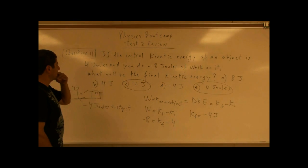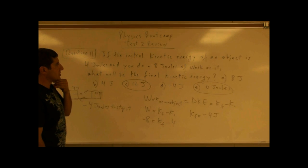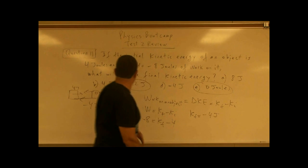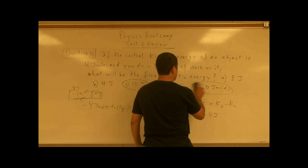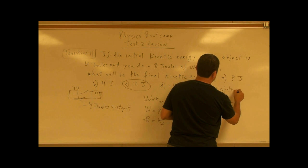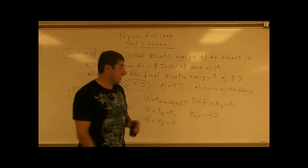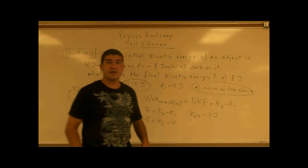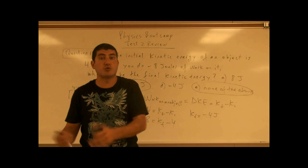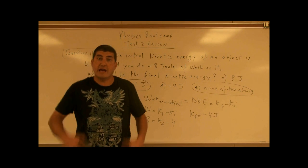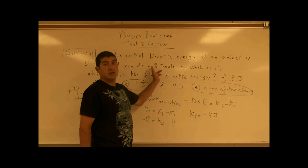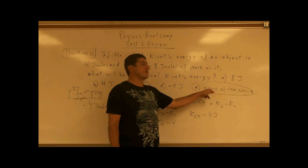So actually, if the problem says negative eight joules of work, the choices should be eight joules, four, twelve, negative four, and choice E should say 'none of the above' — and that's going to be the answer. It is not possible to do negative eight joules of work. If something has only four joules of kinetic energy, by the time you've done negative four joules of work, the thing has stopped. After stopping it, if you push it backwards, you're now doing positive work. So you would choose E, none of the above.